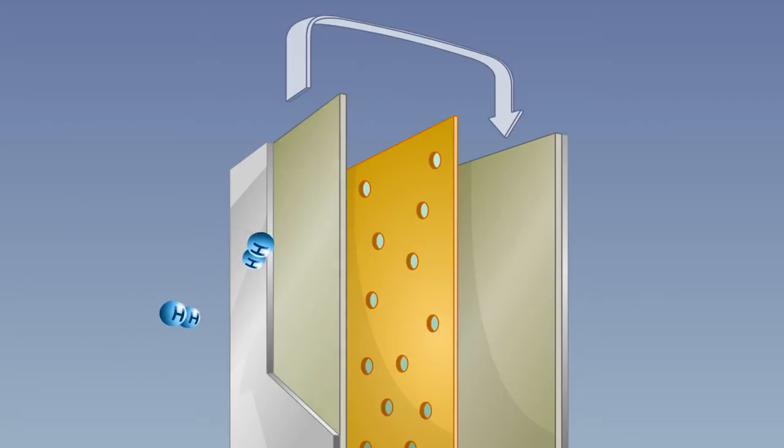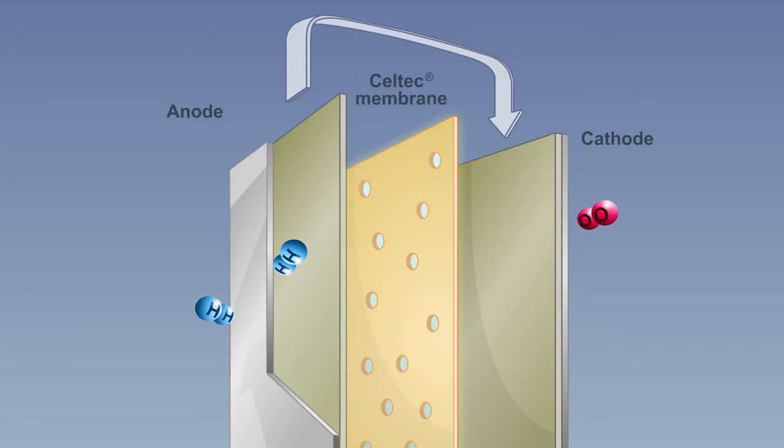Hydrogen is continuously introduced into the anode of the membrane electrode assembly and oxygen to the cathode. The two electrodes are separated from each other by a polymer membrane made of a specially heat-resistant plastic. With platinum acting as a catalyst,